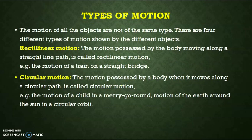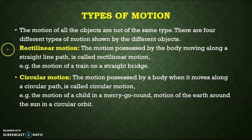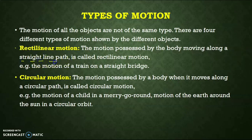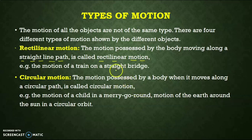Types of motion. The motion of all objects is not the same type. There are four different types of motion shown by different objects. First is rectilinear motion. The motion possessed by a body moving along a straight line is called rectilinear motion, or motion in a straight line. For example, the motion of a train on a straight line is known as rectilinear motion.